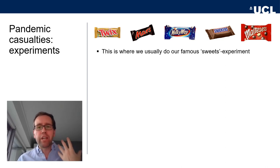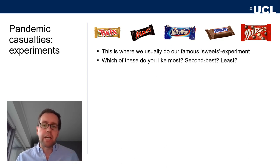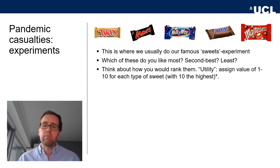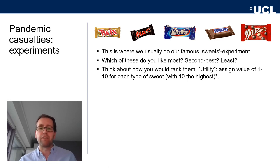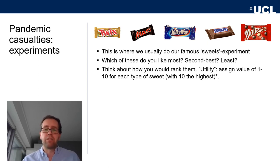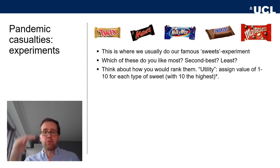Imagine you were randomly allocated a Twix, Mars, Milky Way, Snickers, or gummy bears at the entrance. Think about how much you like, say, Twix. Which one do you like most? Do you like Twix better than Milky Way? Snickers better than Twix? Gummy bears better than all of those? How would you rank order those treats? We could assign a value to this rank ordering — give a 10 to the thing you like most. In my case, I like Snickers most, so I'd give Snickers a 10, and I really dislike Maltesers, so Maltesers gets a 1, with Mars, Twix and Milky Way somewhere in between.